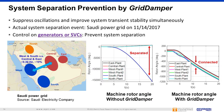Grid Damper can also prevent system separation and improve system transient stability. The Saudi Arabia power grid was forced to separate into two islands on November 4, 2017. The figures on the right compare cases with and without Grid Damper. Based on simulations, Grid Damper implemented on generators and voltage compensators effectively damped the oscillation and prevented the system from separation.